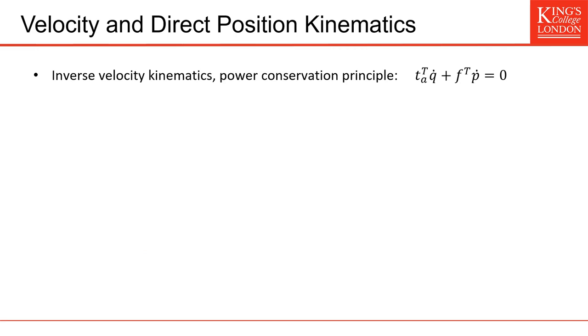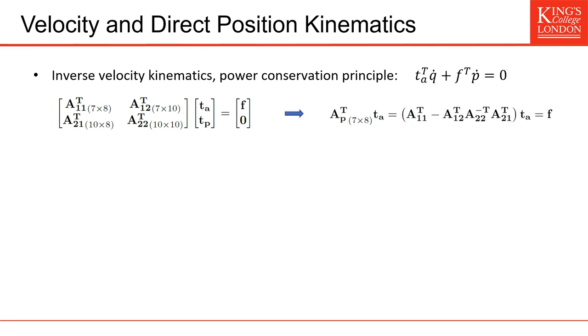For the inverse velocity kinematics, we use the power conservation principle. This means that the tension in the cables times its speed should be equal to the force on the platform times its speed if we neglect friction. So all the energy that goes in the system should go out. Now we're interested in the direct relation between the active cable and the force on the platform. So we want to remove the influence of the vector of the passive cables. To do this, we split our static matrix into four components. And after some manipulation, we obtain a direct expression of the force as a function of the tension in the active cables. Then we can use the power conservation principle to calculate the velocity relation. This also describes a small displacement.